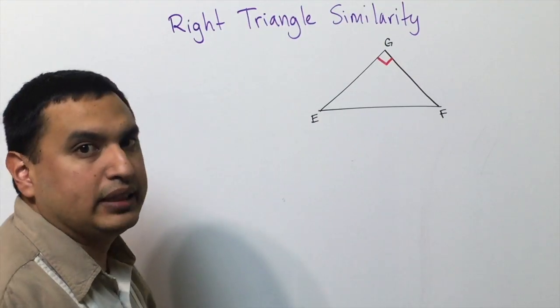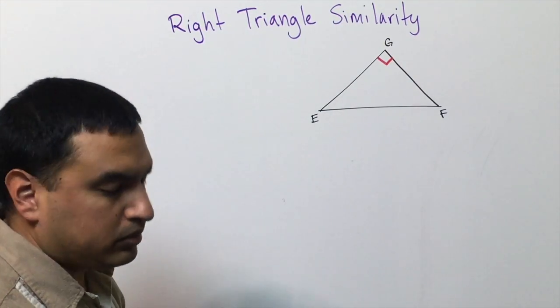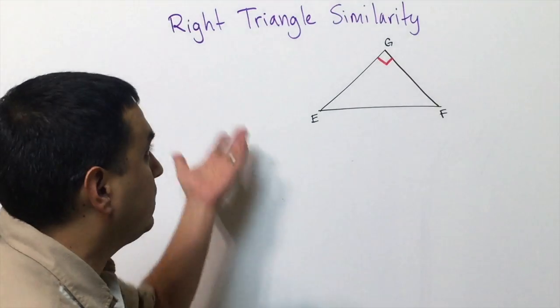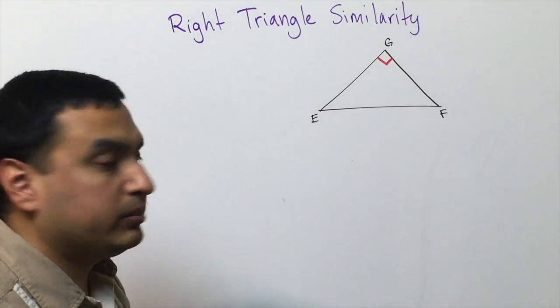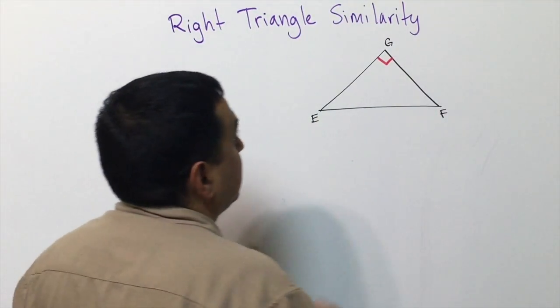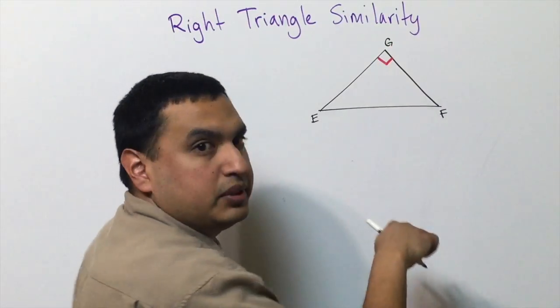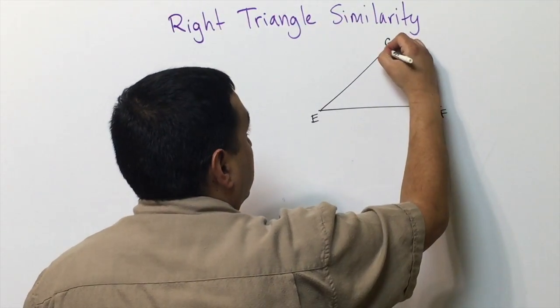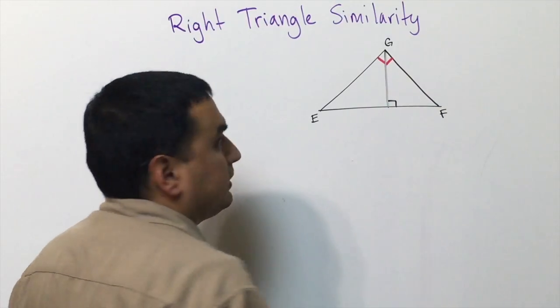This lesson deals with right triangle similarity. What we're talking about is if I take the point opposite the hypotenuse and I draw a line straight down so that it's perpendicular with the base.